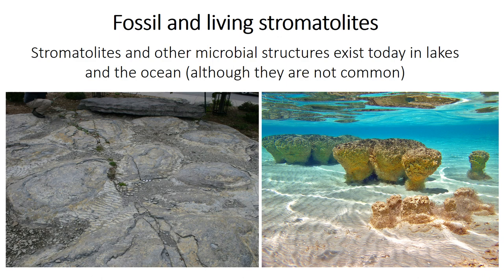How do we know that stromatolites form this way? Well, there are still stromatolites living today in certain places in the ocean and in lakes. They're no longer common — they're only found in specific places — especially compared to how common they were in the Earth's past. The photo on the right shows some modern stromatolites living in the shallow ocean, while the stromatolites on the left are large domes that lived in a very similar environment more than 450 million years ago in eastern Canada. Both formed in nice shallow waters, as indicated by the small ripples you can see on the sand or sediment between the stromatolites.